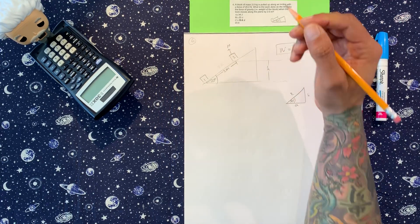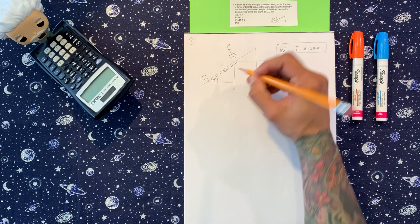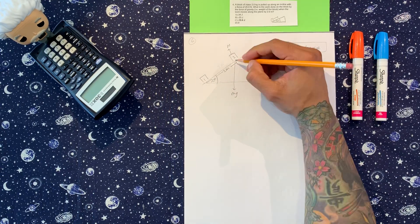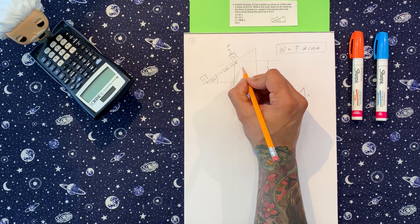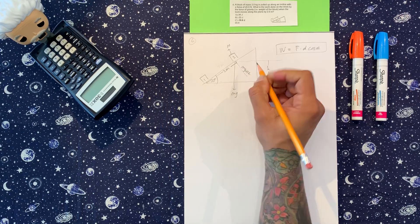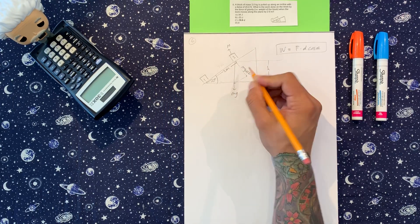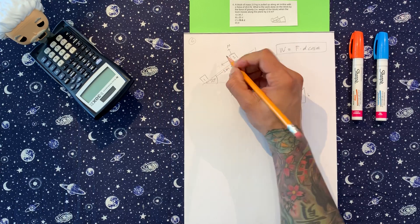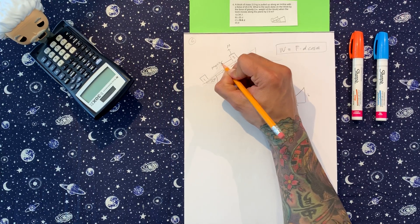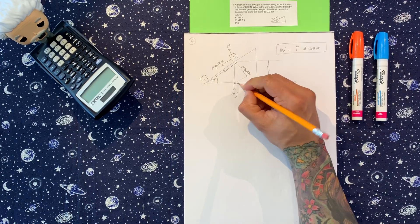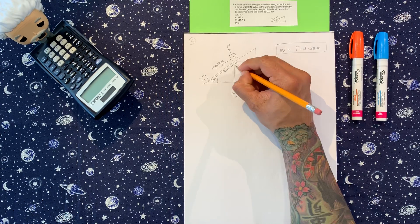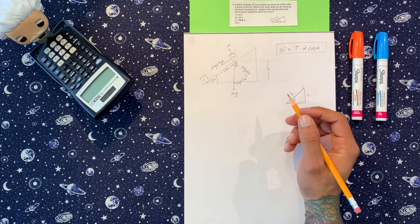We got the normal force. Like always, we got mg. Okay, back here, we got mg cosine theta. Going down like this, we have on here, we have mg sine theta, right, because this is mg sine theta.